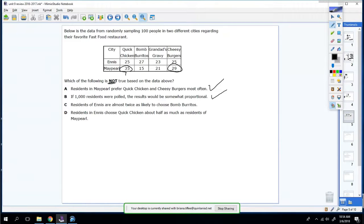Residents of Ines are almost twice as likely to choose Bomb Burritos. That is true as well. If I multiply 15 by 2, you get 30, which is close to 27. So that's true. D, residents in Ines chose quick chicken about half as much as residents in May Pearl. That is not true. So the answer is D.